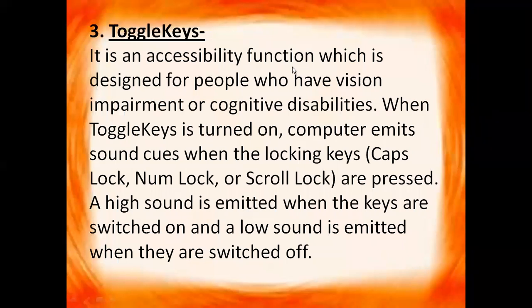Next we have toggle keys. It is an accessibility function designed for people who have vision impairment or cognitive disabilities. When toggle keys is turned on, the computer emits sound cues when the locking keys — Caps Lock, Num Lock, or Scroll Lock — are pressed. A high sound is emitted when the keys are switched on, and a low sound is emitted when they are switched off.